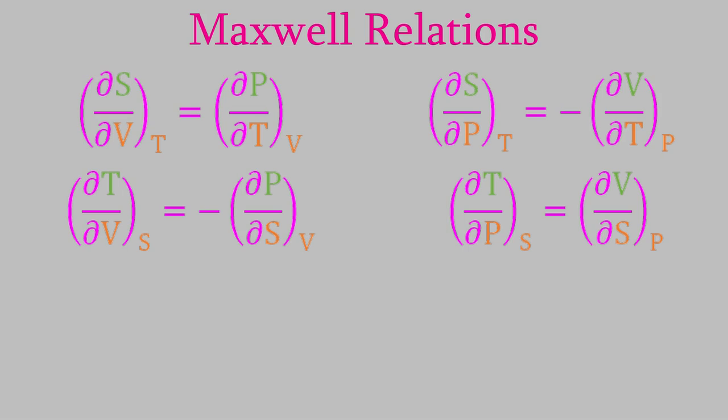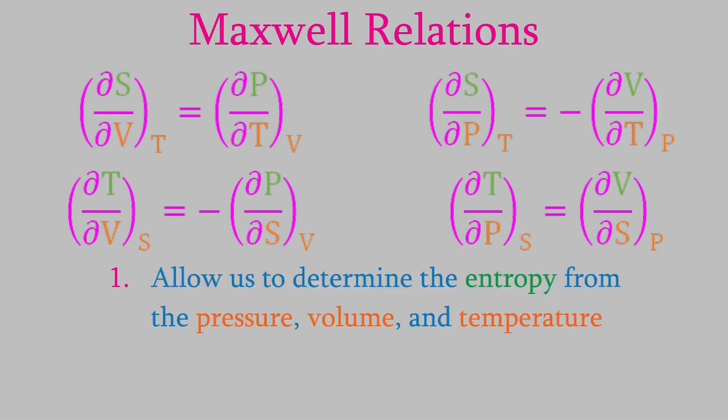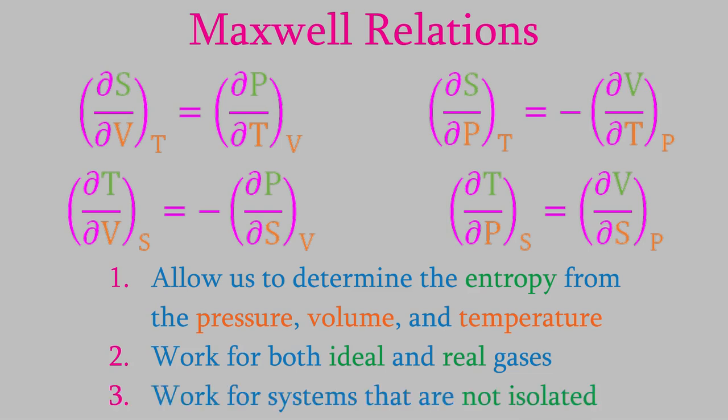The reason why the Maxwell relations are important and useful is because they give us a way of relating the entropy to other more easily measured properties of a system. And even better, the Maxwell relations apply even to real gases and systems that aren't isolated from their surroundings. This makes Maxwell relations applicable to almost any system we might want to study. So today, I want to talk about how we use the Maxwell relations to study chemical systems.